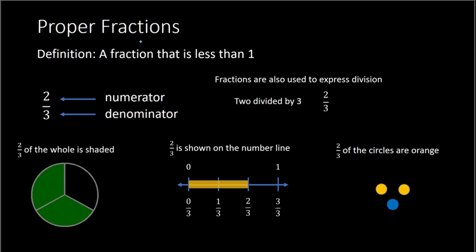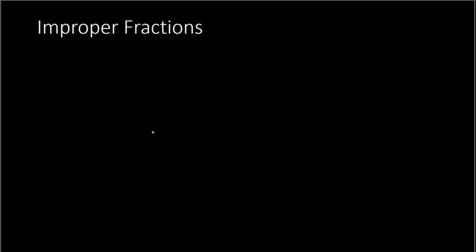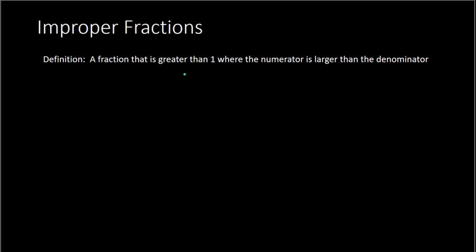For a proper fraction, the numerator must be smaller than the denominator. If it's the other way around — if the numerator is bigger than the denominator — then that is what we call an improper fraction. It's greater than 1, where the numerator is larger than the denominator. So for example, 8 over 3 would be improper because the numerator is bigger than the denominator.